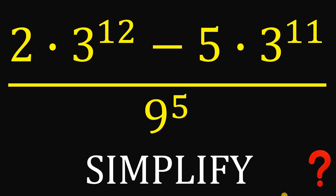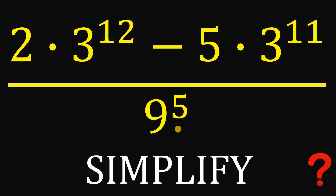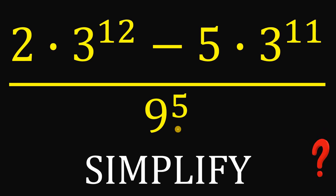For today's video we will answer a math challenge given by one of our followers. Can you simplify this without using any calculator? We have 2 times 3 to the power of 12 minus 5 times 3 raised to the power of 11, all over 9 raised to the power of 5. You can pause this video if you want to give this problem a try.